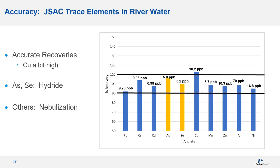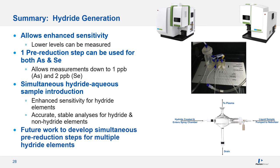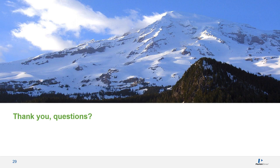In summary: hydride generation allows enhanced sensitivity for measuring lower levels. A single pre-reduction step can be used for both arsenic and selenium, enabling measurements down to 1 ppb for arsenic and 2 ppb for selenium. Using the Hydromist simultaneous hydride-aqueous sample introduction system, we see enhanced sensitivity for hydride elements similar to dedicated hydride analysis, while achieving accurate, stable results for non-hydride elements. Future work will develop simultaneous pre-reduction for additional hydride elements and further optimize Hydromist conditions.